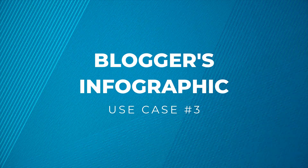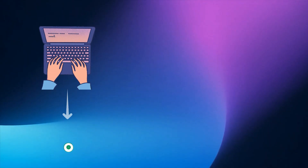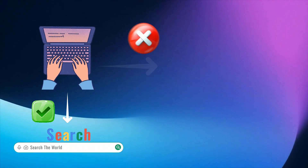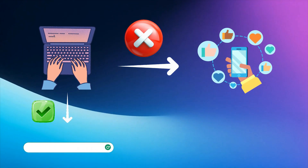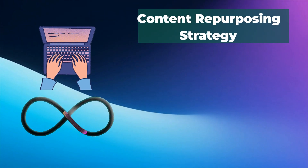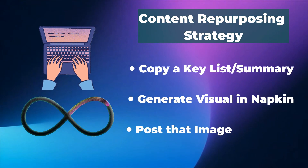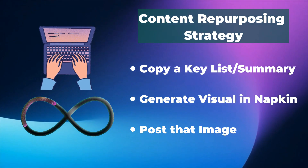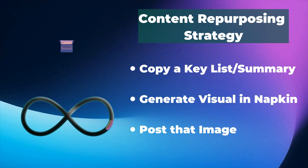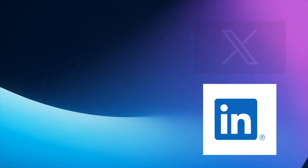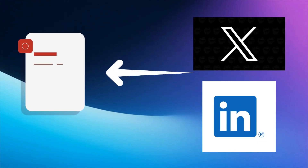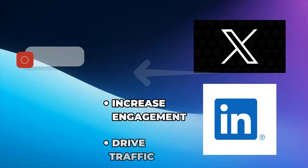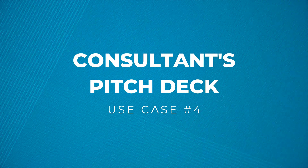Third, the Blogger's Skimmable Infographic. Long-form blog posts are effective for SEO, but perform poorly on social media platforms where visual content is key. A powerful content repurposing strategy is to copy a key list, summary, or data set from an article, generate a clean visual in Napkin AI, and post that image on LinkedIn or Twitter with a link back to the full post. This can significantly increase engagement and drive traffic.